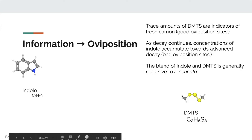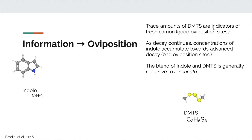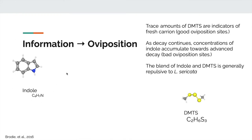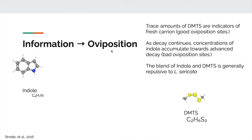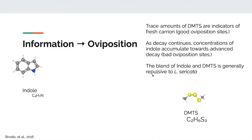So information leading to a good food resource signal would be indole in the presence of one or more of these three: phenol, m/p-cresol, or 1-octan-3-ol — very common in canine feces headspace. Continuing on, trace amounts of DMTS are good indicators of fresh carrion. However, as decay continues, concentrations of aromatic compounds such as indole begin to accumulate. Recalling the 'smell of death' graph, these aromatic compounds dominate towards the later stages of decay — mostly advanced — basically telling the fly that this carcass is old, already colonized, and not a good spot for oviposition. So DMTS alone in trace amounts signals a fresh carcass suitable for egg-laying, but a blend of DMTS with indole signals something completely different and makes the resource repulsive to L. sericata.